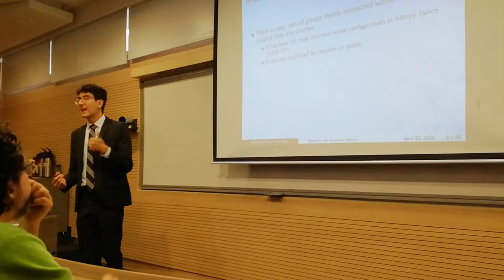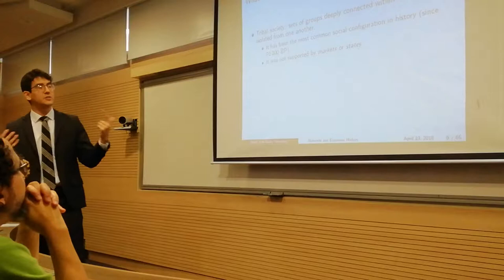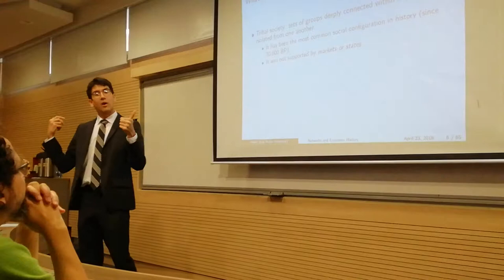Think that the most important explanations in social science about social order are based on that. Economics is about how society is stable through markets and political science and law is about how a state keeps everything in order. So how is it possible that these societies were stable if they didn't have neither of them?